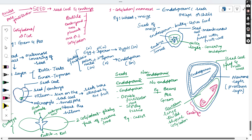The embryo part contains the plumule at the upper end and the radicle at the lower end. The plumule is present at one end of the embryonal axis to form the shoot system, and the radicle is at the other end to form the root system. The plumule is actually covered with a layer called the coleoptile.